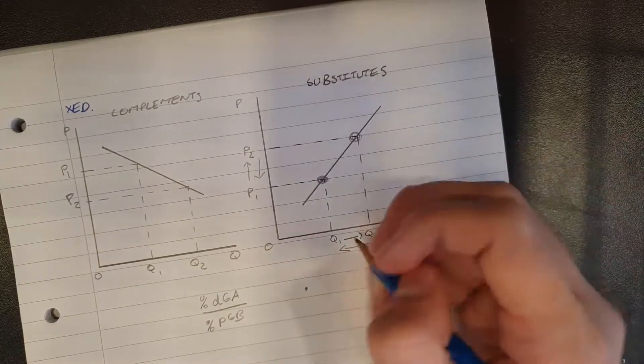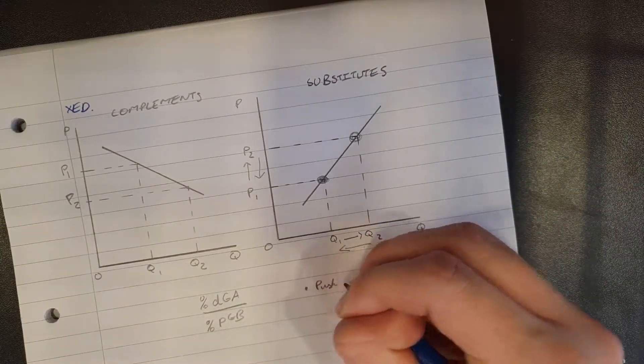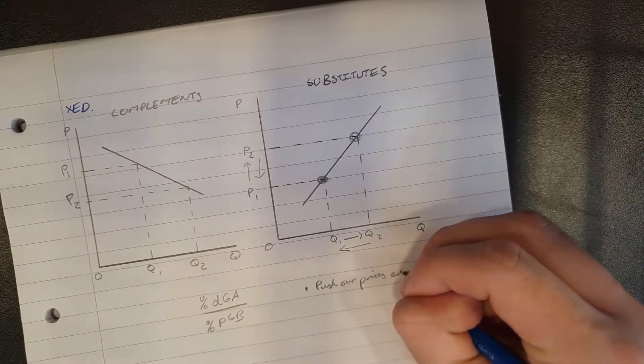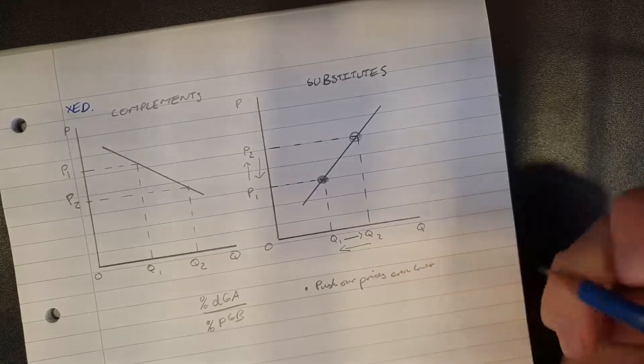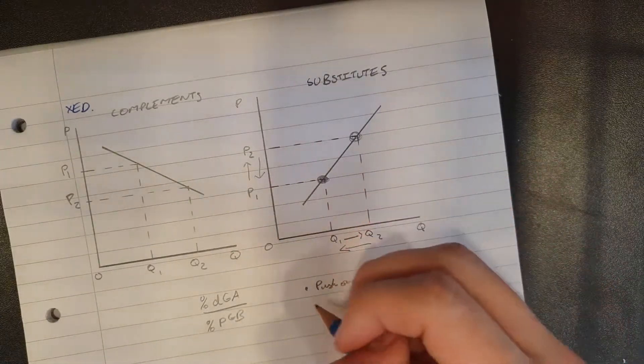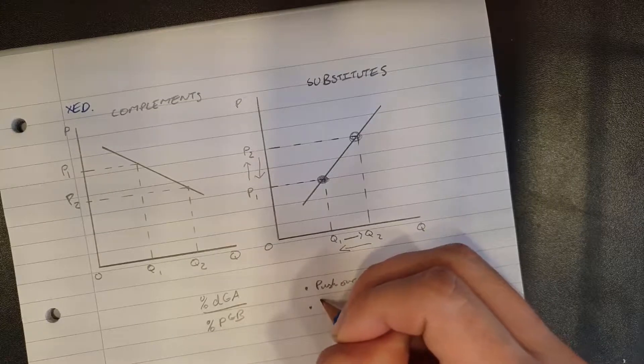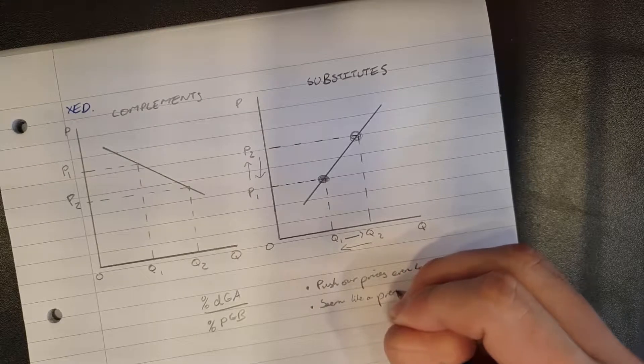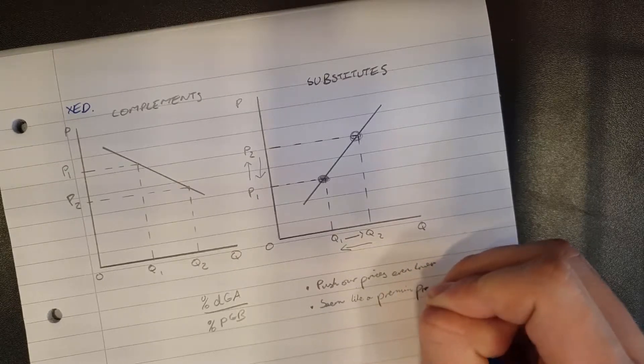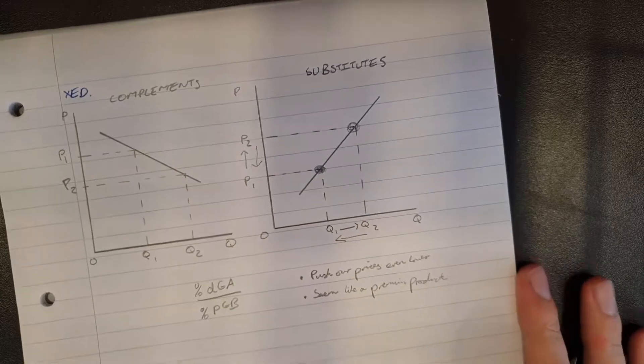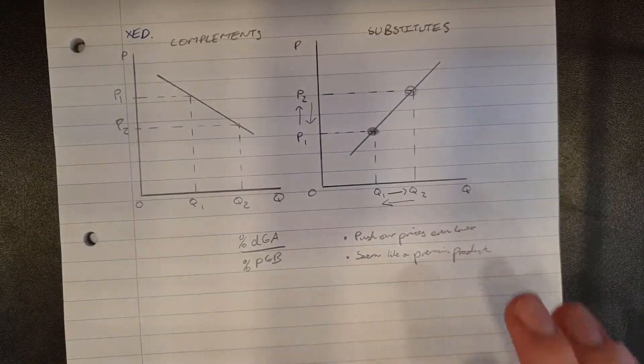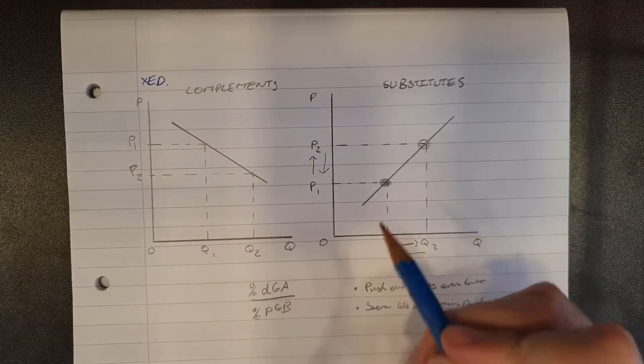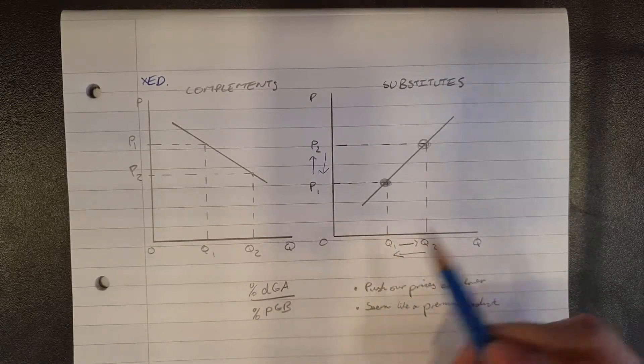And if they keep this lower price than my beer, I'm going to consistently get a lower quantity demanded. This leaves us with a few business decisions as what we could do. We could either push our prices even lower to compete with their beer or we could attempt to make our beer seem like a more premium product and leave it how it is and hope that people will pay more for the premium. So this allows us to effectively model how rivals' pricing decisions affects our own demand.